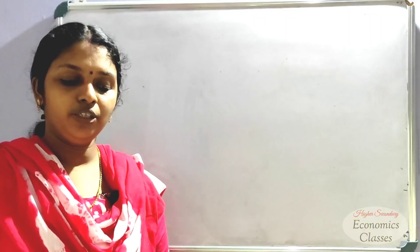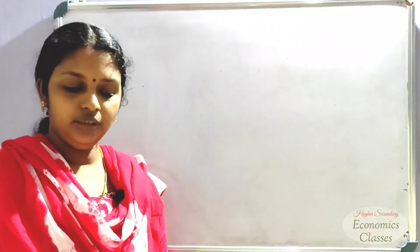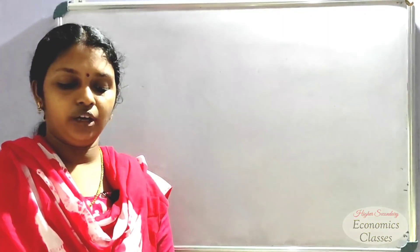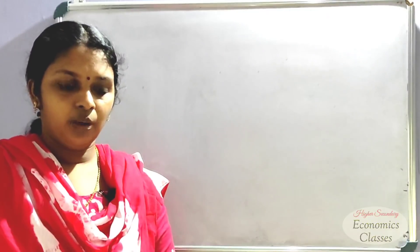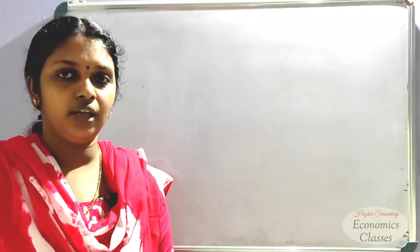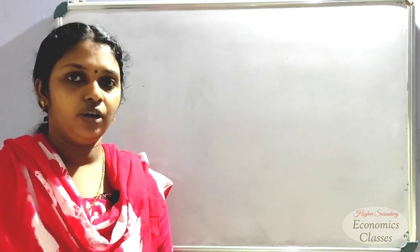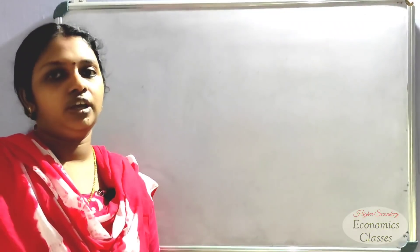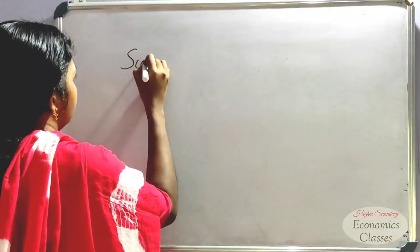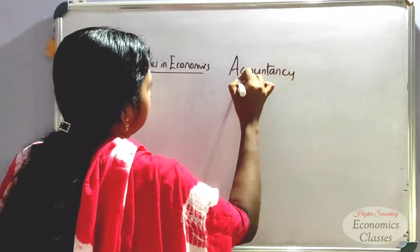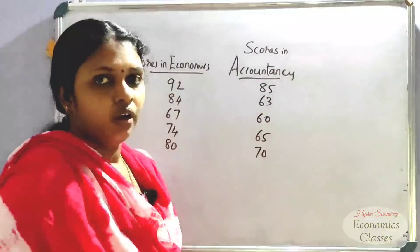The scores obtained by 5 students in Economics and Accountancy are given below. We will calculate the rank correlation coefficient. Then, identify another numerical method of calculating correlation. If you want 3 marks in the rank correlation, the answer is correct. The rank correlation method is called Spearman's Rank Correlation Coefficient. Let's find the answer.